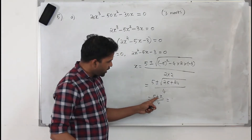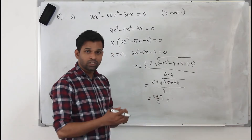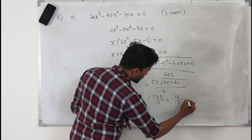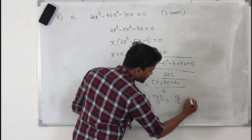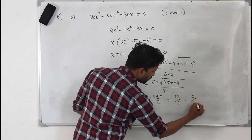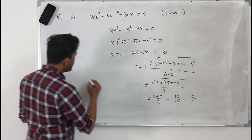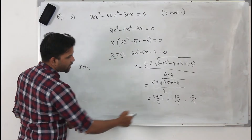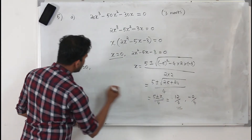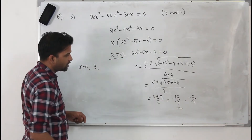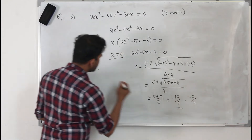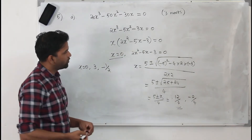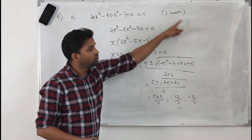So you get two solutions: one is 5 plus 7 which is 12 over 4, and 5 minus 7 which is minus 2 over 4. So your three solutions are x equals 0, x equals 12 over 4 which is 3, and x equals minus 2 over 4 which is minus one half. There are three solutions, and if you write these you get three marks.